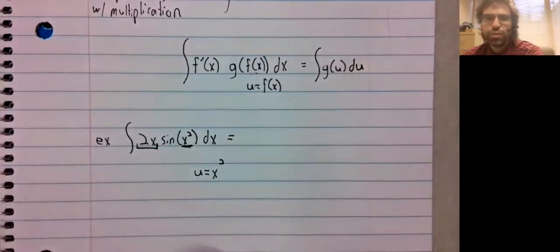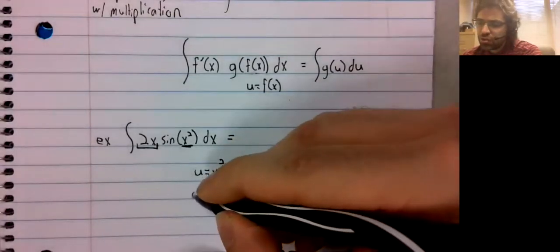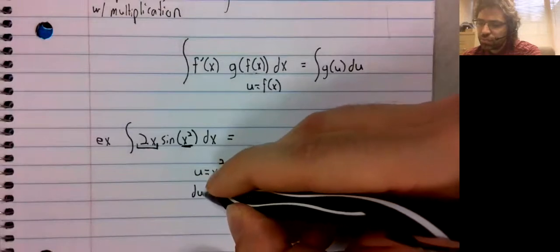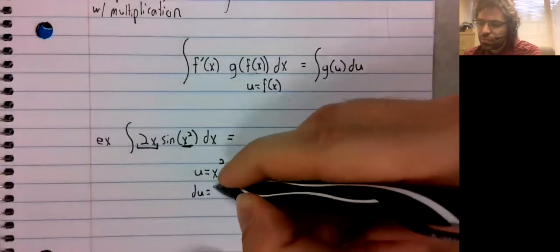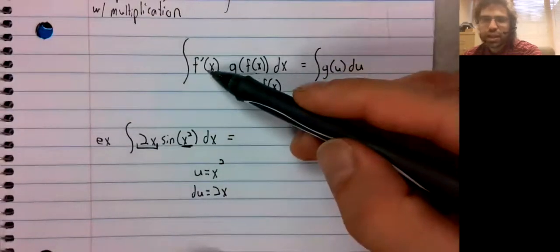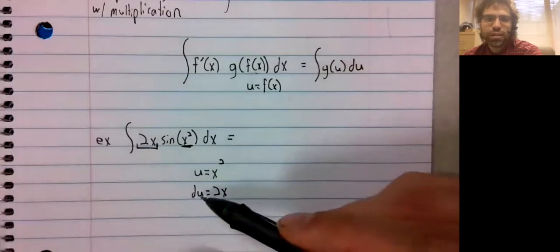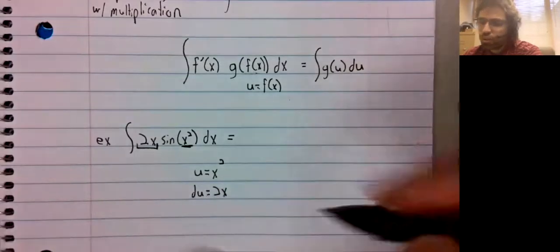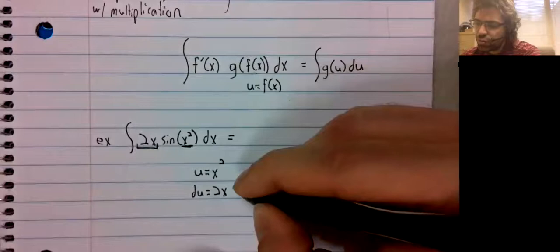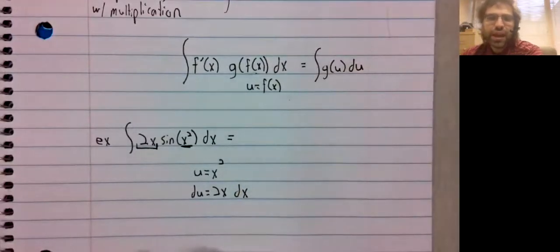If u equals x squared, the way we normally write this, we're supposed to have the derivative of u. We normally write that du equals the derivative of u dx.